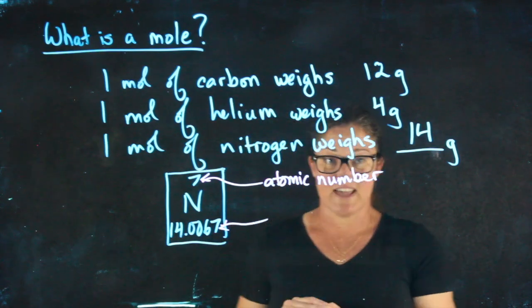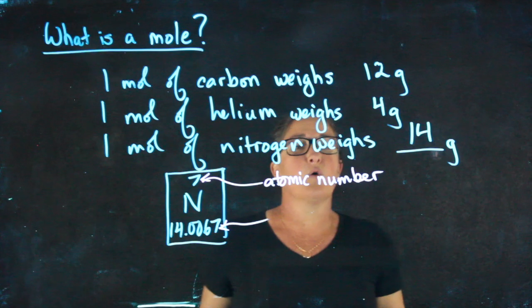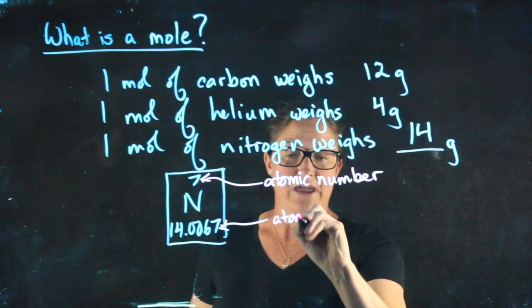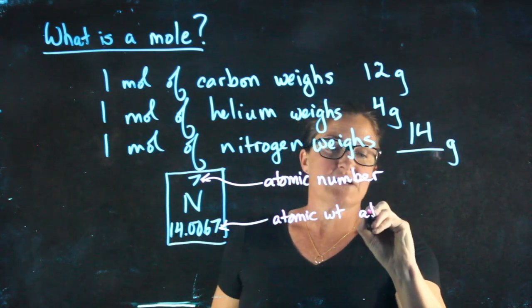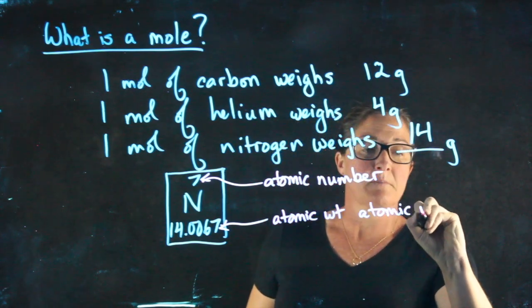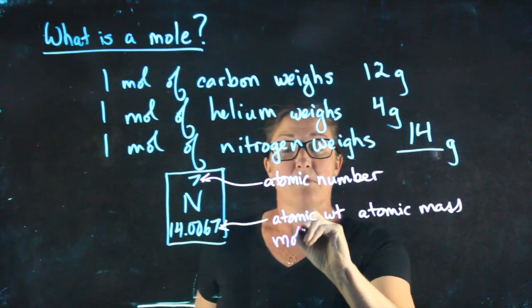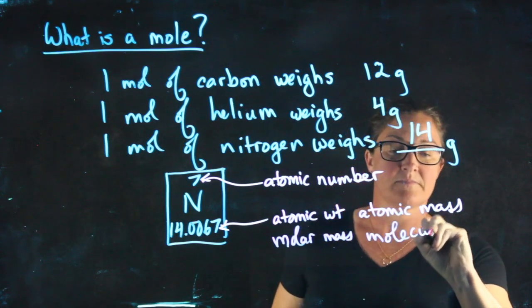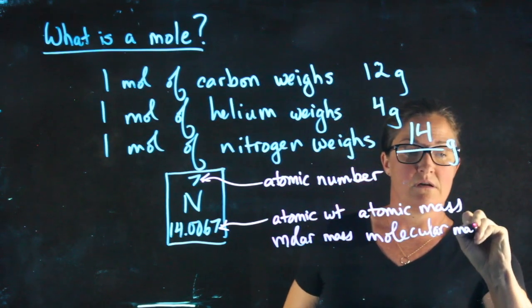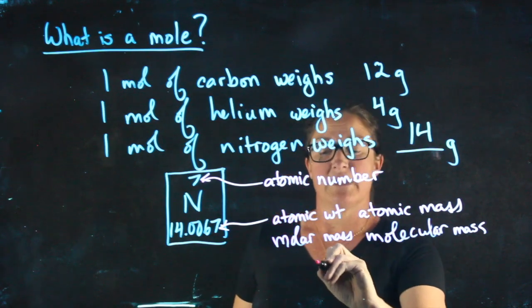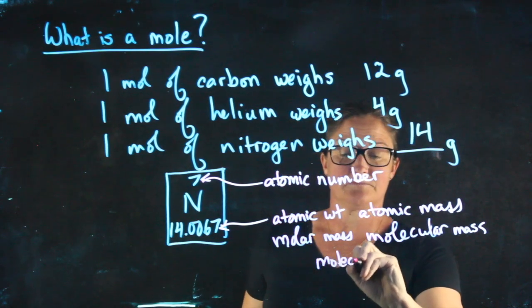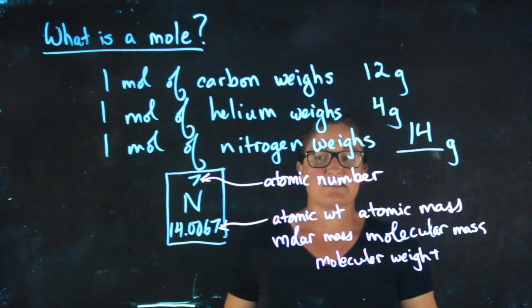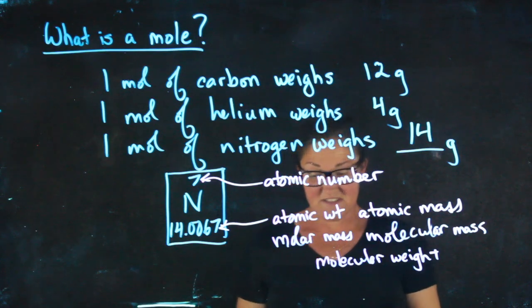14.0067 can be referred to as a whole bunch of things that are almost the exact same thing. For example, it can be called the atomic weight, the atomic mass, the molar mass, the molecular mass. The one that we will use most commonly is going to be molecular weight. All of these things actually mean slightly different things, but for all practical purposes, we're going to use them as the same.